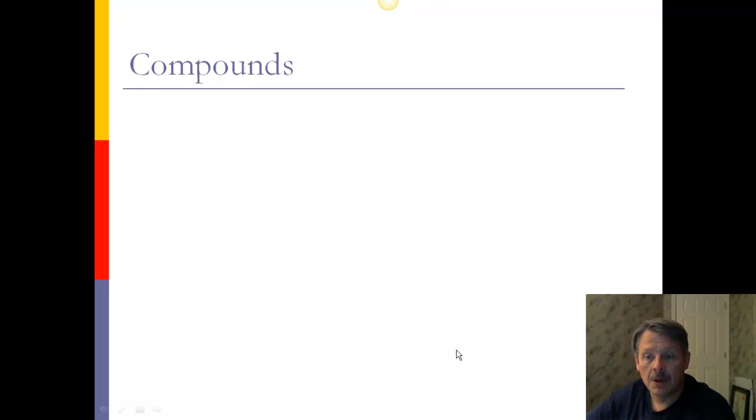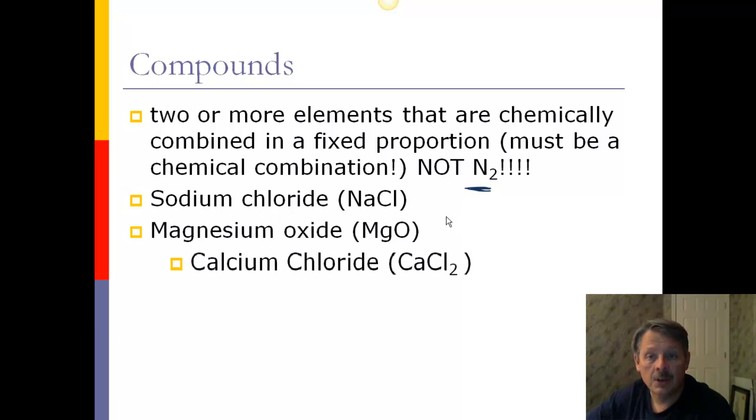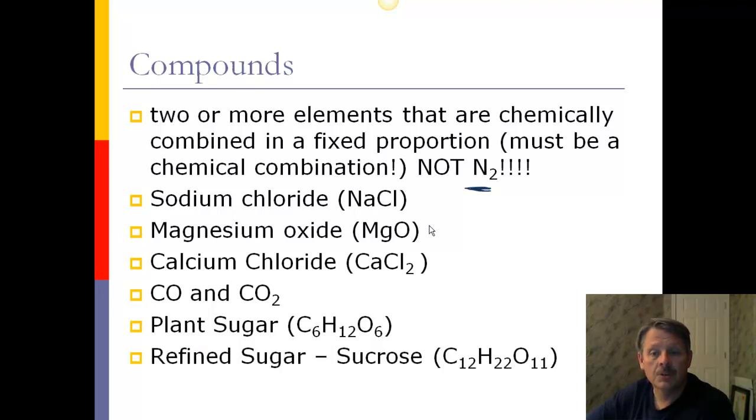Now, what about compounds? A compound must not be an element. So it's actually two or more elements that are chemically combined in a fixed proportion. For example, it might be H2O, but it could not be N2 because N2 is the same element. It's two atoms of nitrogen. So, for example, it could be sodium chloride, magnesium oxide, calcium chloride, carbon monoxide or carbon dioxide, plant sugar which is glucose, or refined sugar which is sucrose.